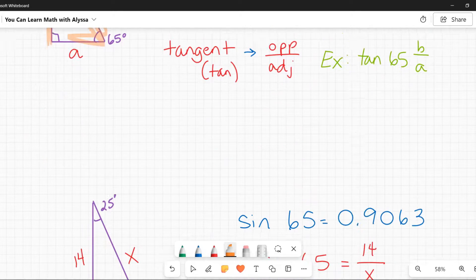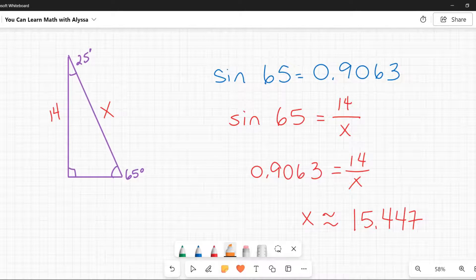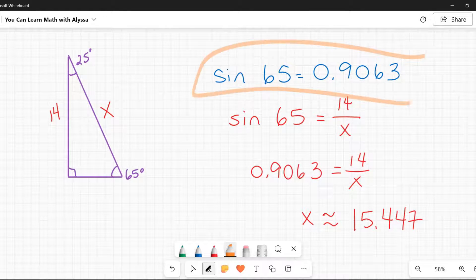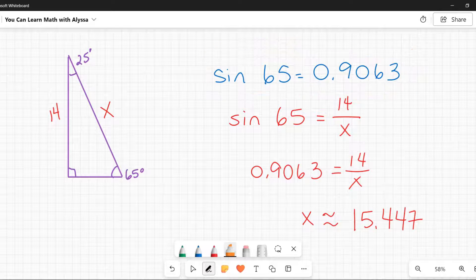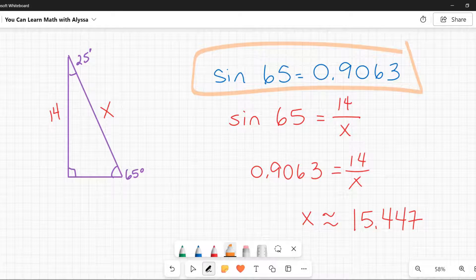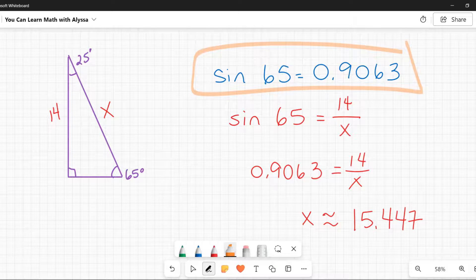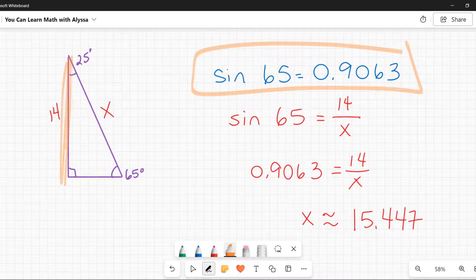To solve math problems with these, you use these pre-recorded ratios which are available in your calculator or in a sine, cosine, tangent ratio table. In this case I would figure out by looking it up that the sine of 65 is approximately 0.9063.